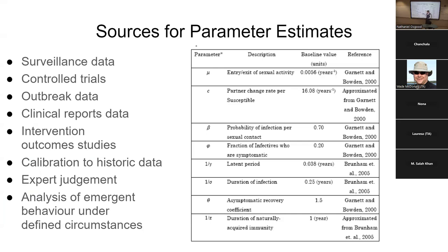There are times where we can look at model outcomes in comparison with observed data and estimate parameters from that. There's a whole process we'll talk about on Friday called calibration, and a process known as statistical filtering — including particle filtering and particle MCMC — that can be used to estimate parameter values based on observed data and model behavior, zeroing in on what the values of the parameters likely are. These techniques are widely used in areas like robotics and inertial guidance systems for planes and rockets.